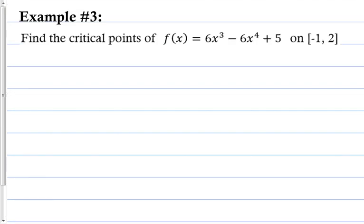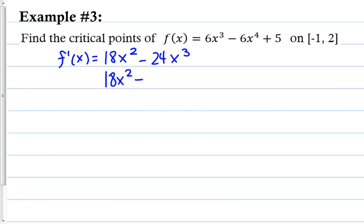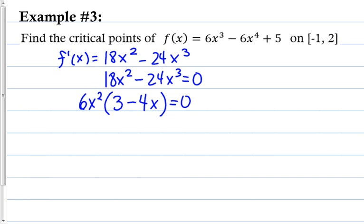Example 3 — same process. First, take the derivative: 18x² - 24x³. Set it equal to 0. I see a greatest common factor of 6x², so pull that out to get 6x²(3 - 4x) = 0. From 6x² = 0, I get x = 0. From 3 - 4x = 0, I get x = 3/4. Those are my critical values. The interval is [-1, 2], and both numbers are in the interval.